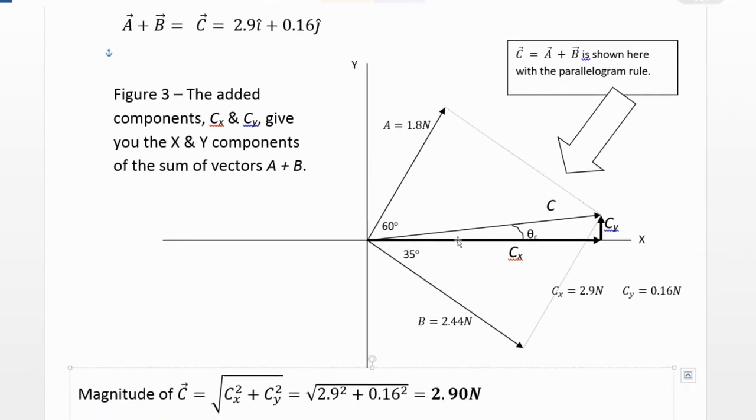So I've drawn now 2.9 in the x and 0.16 in the y, and those are my x and y components of C. And so now I can draw the hypotenuse of that triangle. Remember, the hypotenuse vector by itself is the same or the equivalent as the sum of the x and the y components. So Cx plus Cy is the same as C.